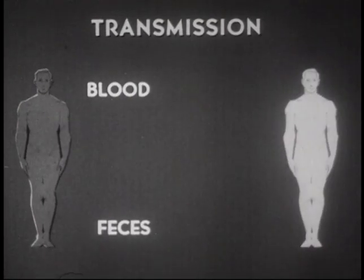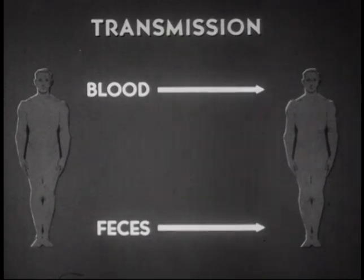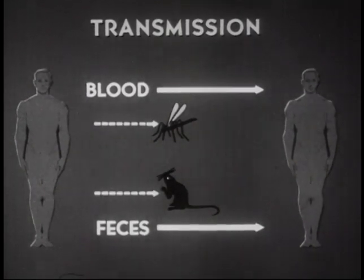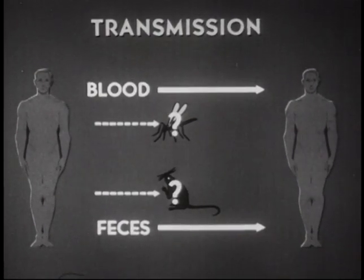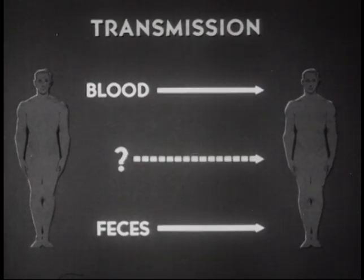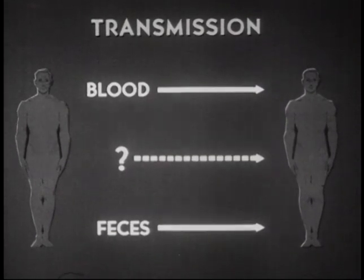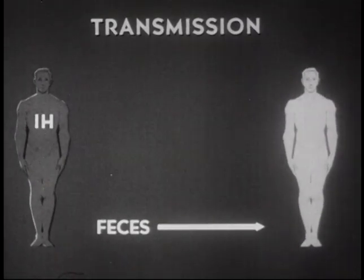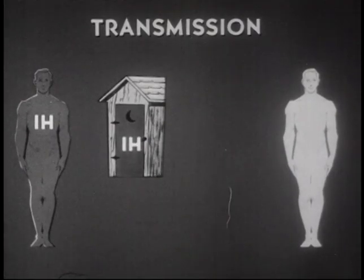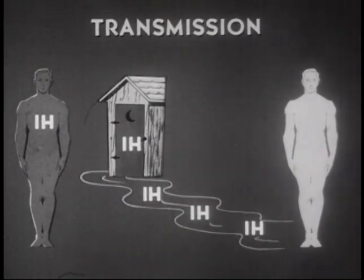Transmission of the disease occurs from both active cases and asymptomatic carriers. Only blood and feces have been proved infectious. No insect vector or animal host has been found that will maintain or pass the virus. The possibility of transmission by other means cannot be excluded. Feces may contain the IH virus, and fecal contamination of the water supply is not controlled by routine chemical water purification.